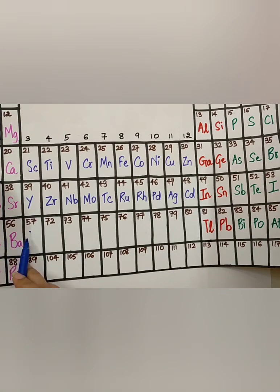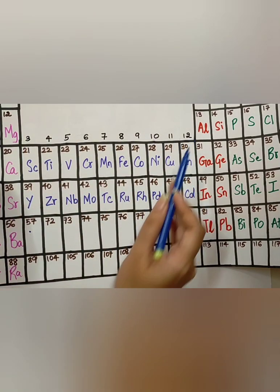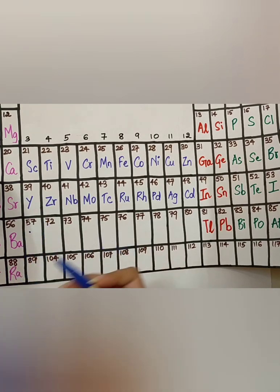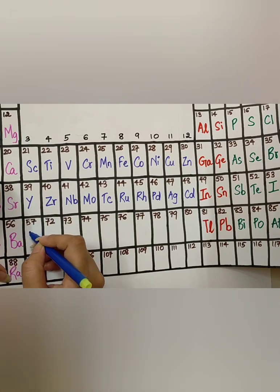Now, we are going to start with the 6th period, from Group 3 to Group 12. If you have noticed, after 57, I have directly written 72. The elements in between, we are going to deal after a while. So, let us start with the 6th period, starting with the 1st element.